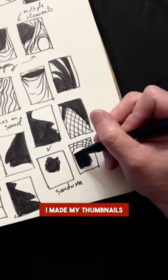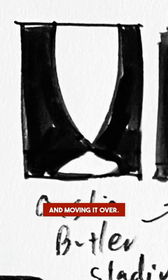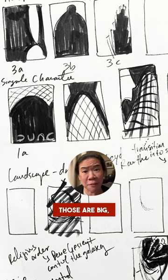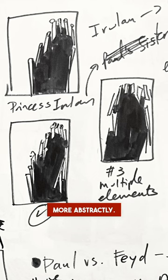I made my thumbnails extra small. Little things like taking this white V shape and moving it over, those are big fundamental changes on a large scale. It also got me thinking more abstractly.